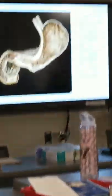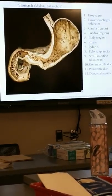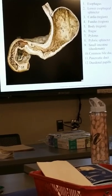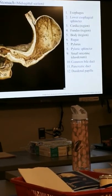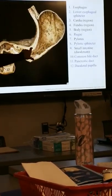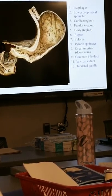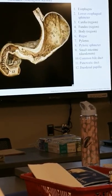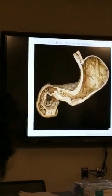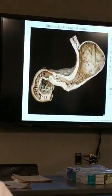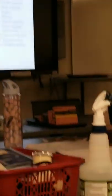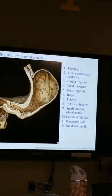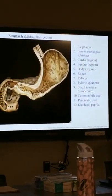You can see rugae — folds within the stomach — that allow it to expand up to about a gallon. As we move through the pyloric region to the pyloric antrum it narrows significantly, and the pyloric sphincter is visible and palpable. This sphincter regulates the movement of that very acidic mixture into the small intestine. As the stomach contents are liquefied, the pyloric sphincter relaxes and the material can squirt into the small intestine.